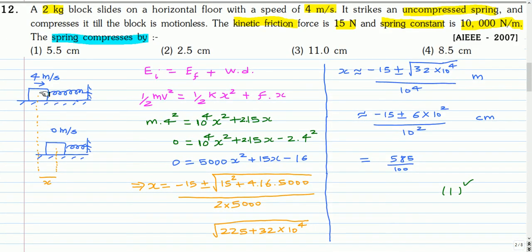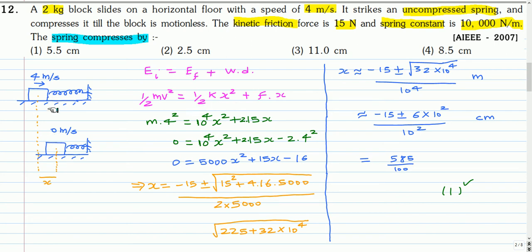Here is the solution. The block moving at 4 m/s comes and touches the spring, then starts compressing it until its velocity becomes zero. Writing the energy equation: initial kinetic energy equals the potential energy stored in the spring plus the work done against friction. So (1/2)mv² = (1/2)Kx² + F_friction × x, where x is the compression distance — the same distance the block travels while compressing the spring.